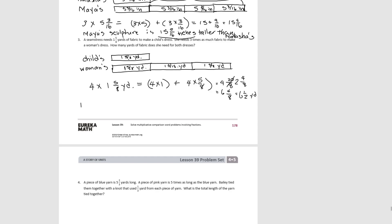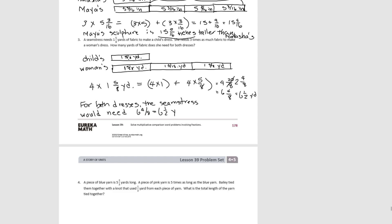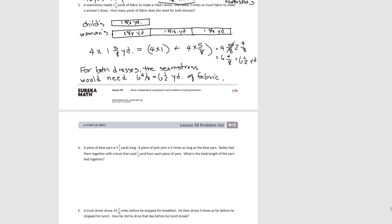So to answer the question: for both dresses, the seamstress would need six and four-eighths, or six and one-half yards of fabric. Let's go on to number four.